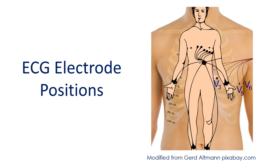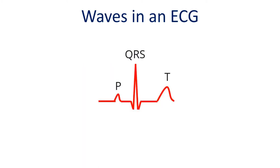ECG is recorded by placing multiple electrodes on designated parts of the body and connecting them to the ECG machine. Typically 4 electrodes are connected to all 4 limbs and 6 electrodes are placed on the chest.